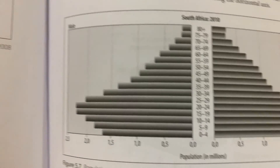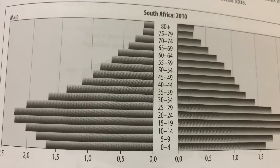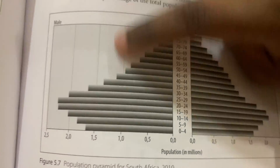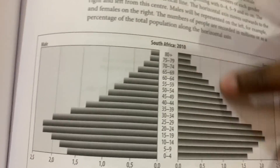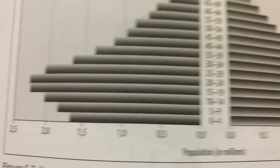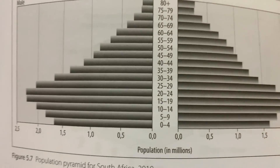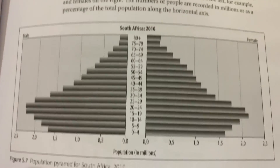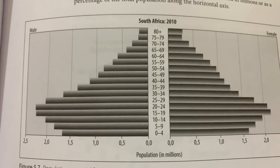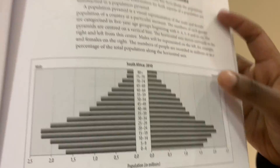The next thing we're going to do is population pyramids — I'll need to get the book for that. A population pyramid is a visual representation of the male and female population of a country at a particular moment. This is South Africa's population pyramid from 2010, showing how our population was structured at that point in time.